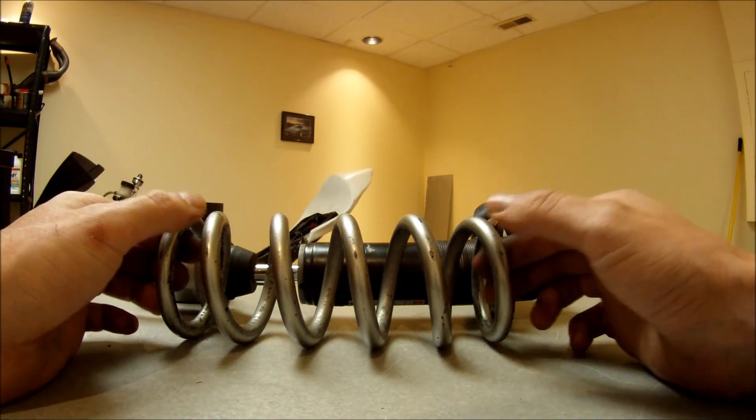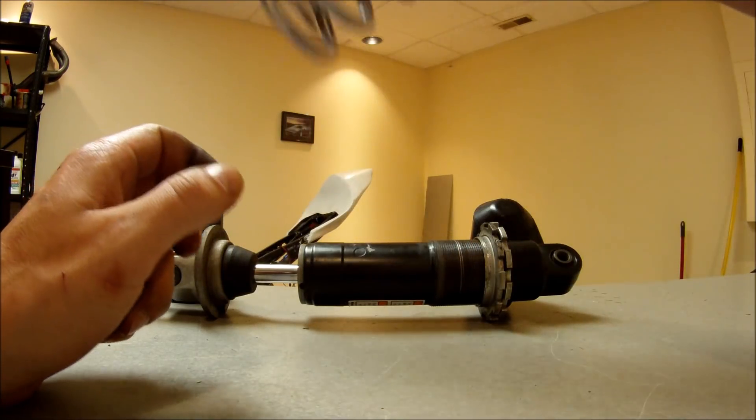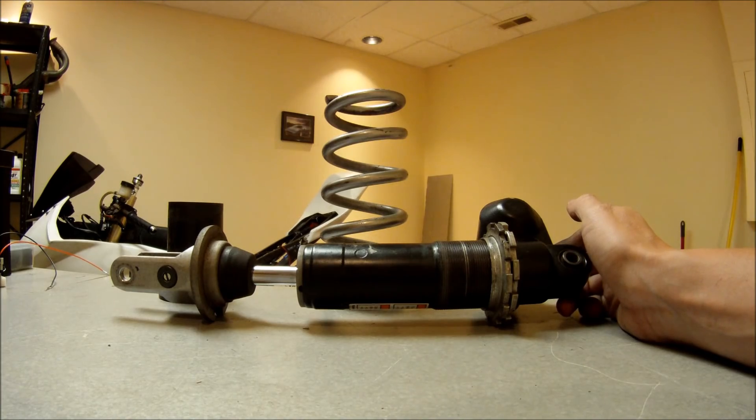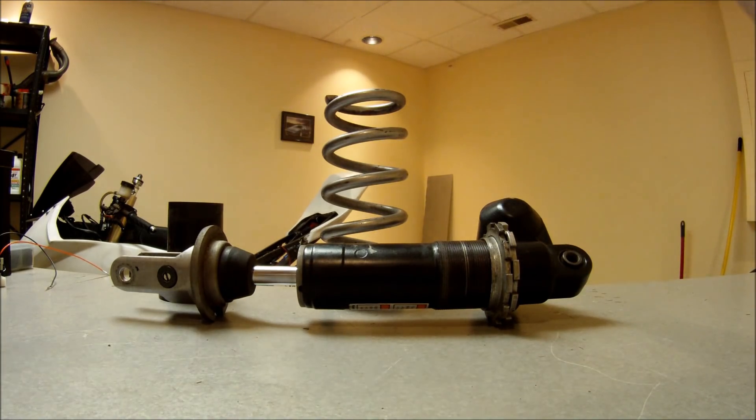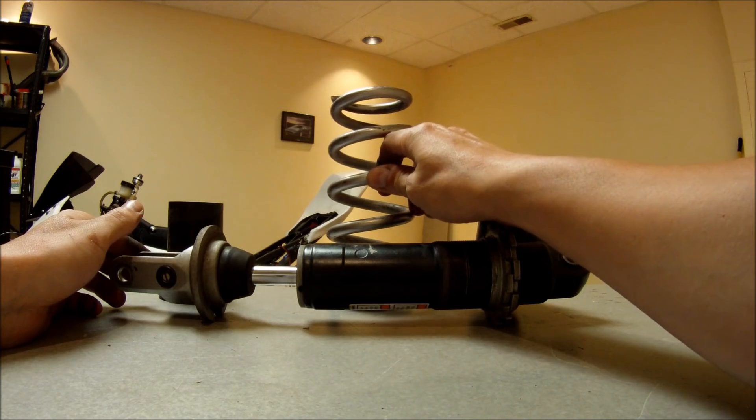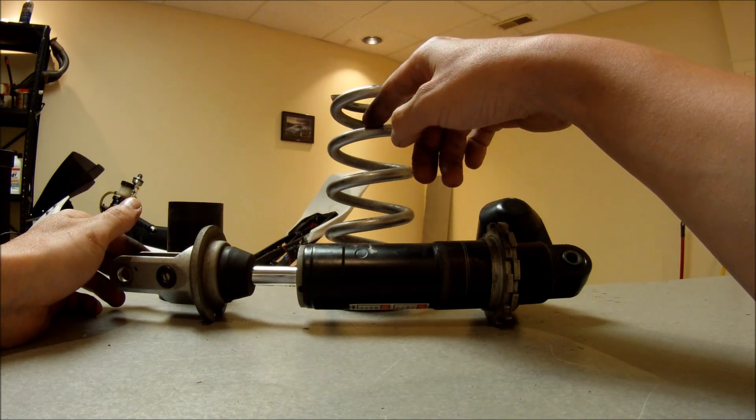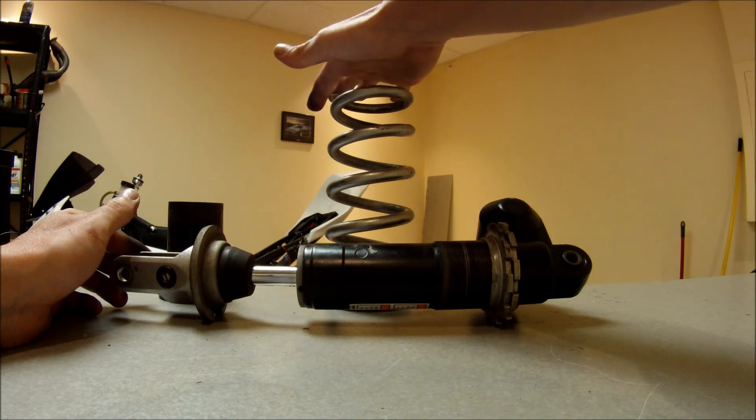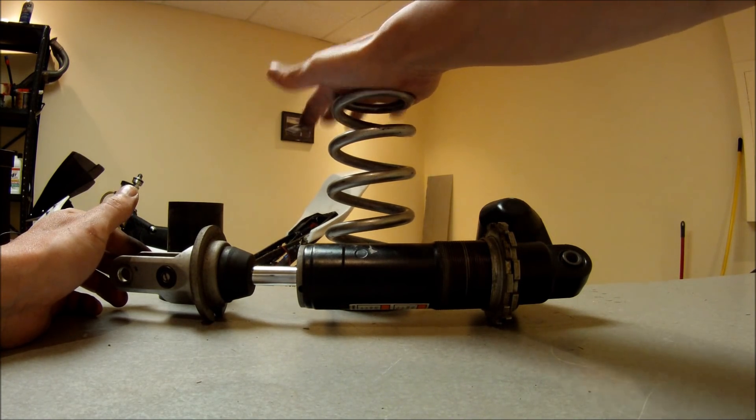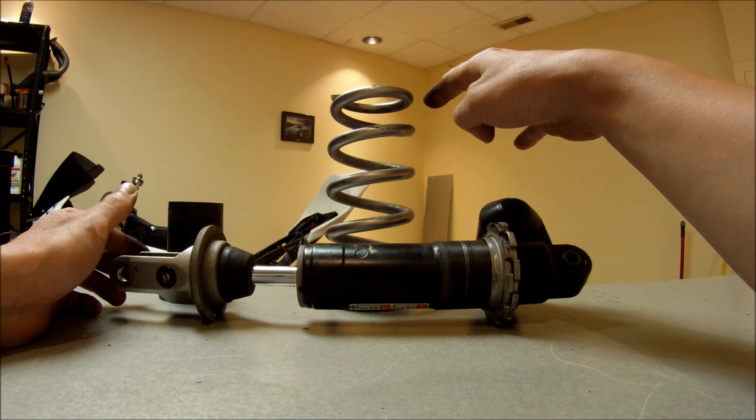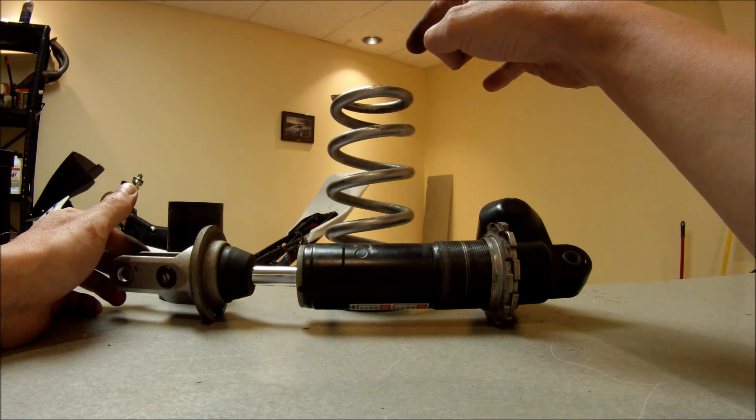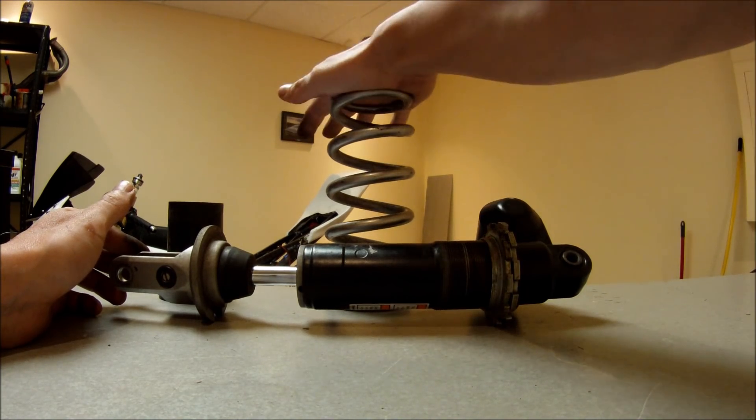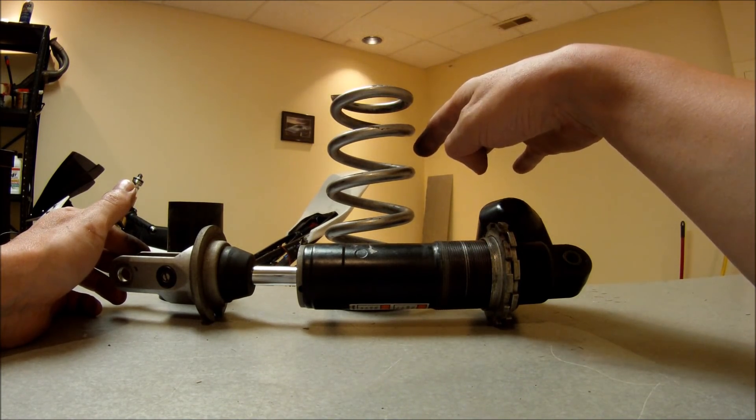What is spring rate? For this spring, the spring rate is 8.3 kilograms per millimeter. What that means is if you put 8.3 kilograms of weight on this spring, it's going to compress one millimeter. If you put 83 kilograms of weight on the spring, it's going to compress 10 millimeters.